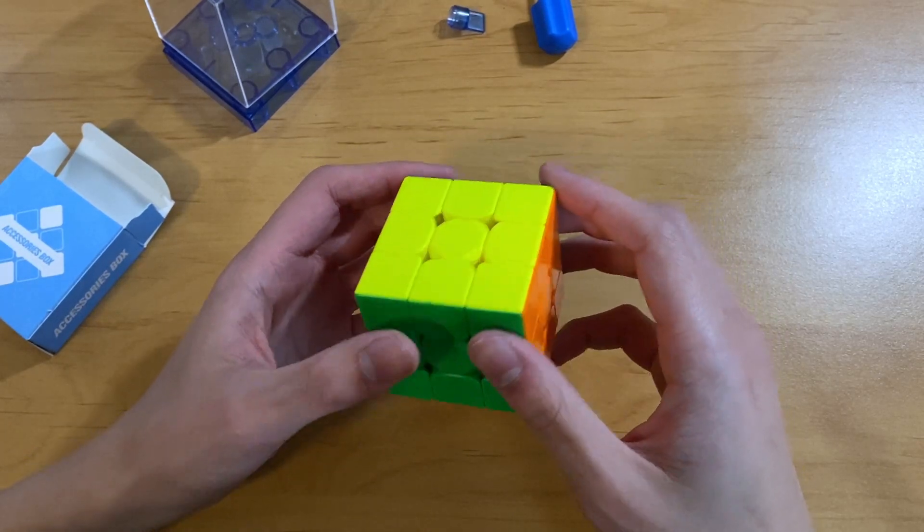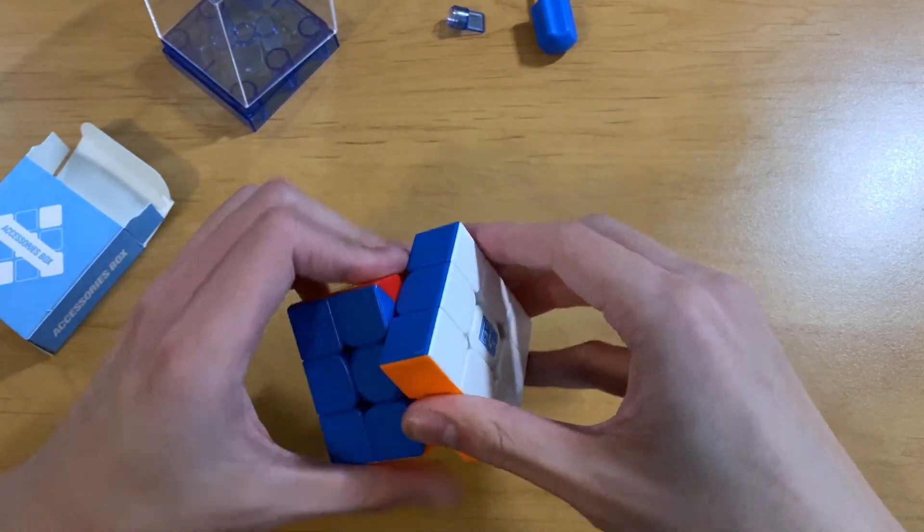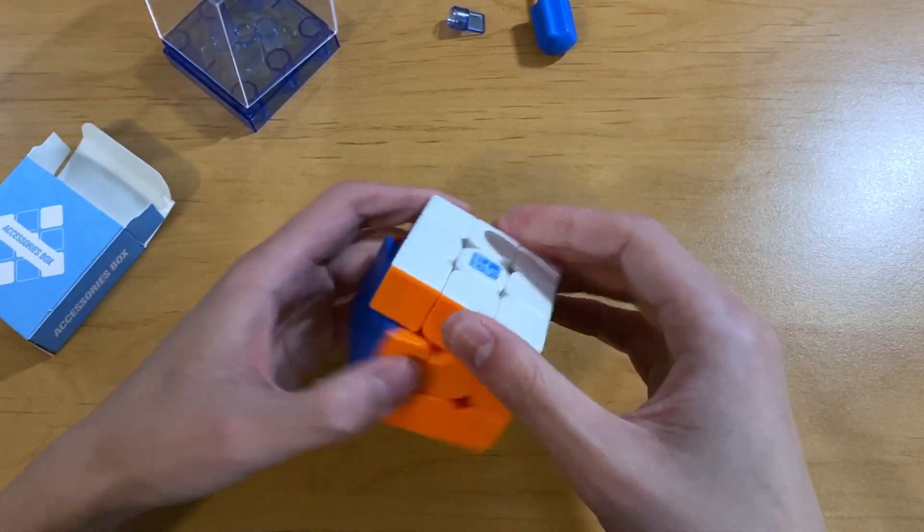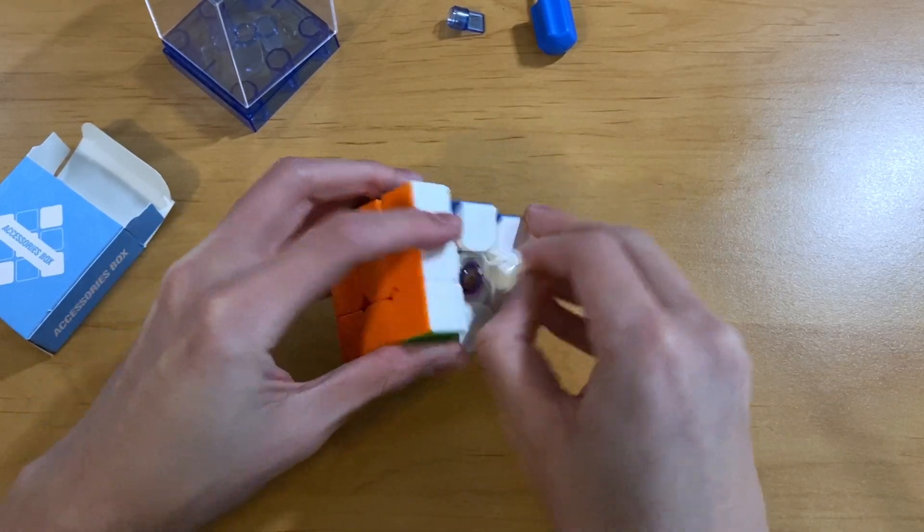So before I actually do any turns, this is really tight right now. I can't even take out an edge. I'm gonna loosen everything first so I can actually take out a piece and look at the core mechanism.